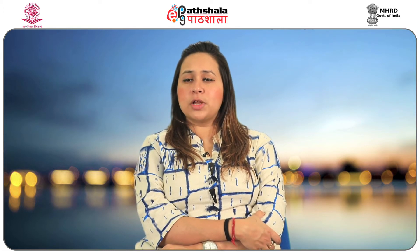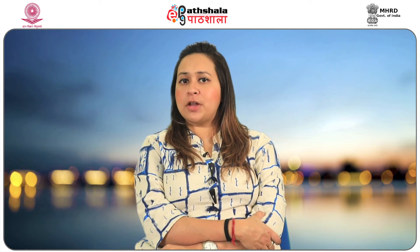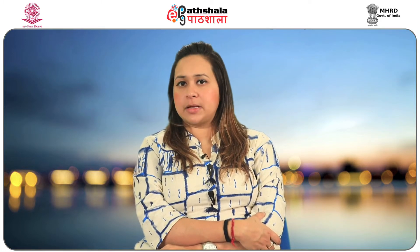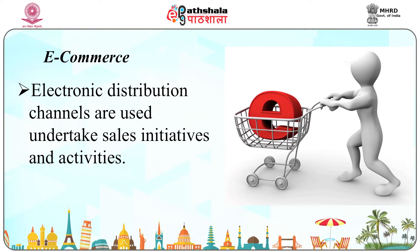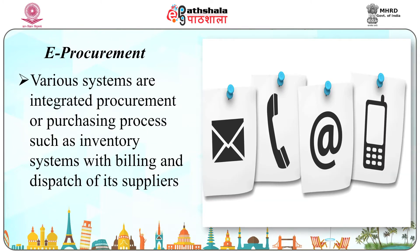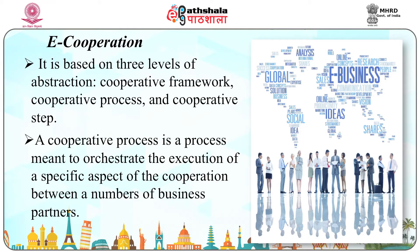These tools would also link suppliers with suppliers and establish a network of e-commerce, e-procurement, e-cooperation, e-marketing, e-network and e-processing. E-commerce: electronic distribution channels are used to undertake sales initiatives and activities. E-procurement: various systems are integrated for procurement or purchasing processes such as inventory systems with billing and dispatch of suppliers. E-cooperation: it is based on three levels of abstraction — cooperative framework, cooperative process and cooperative step. A cooperative process is meant to orchestrate the execution of a specific aspect of the cooperation between a number of business partners.